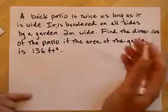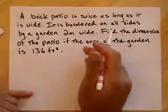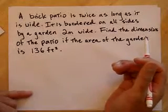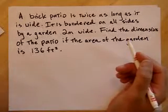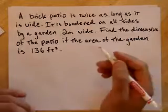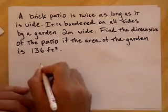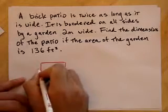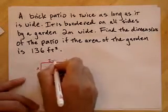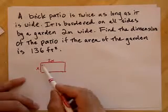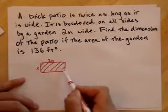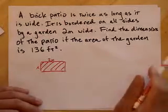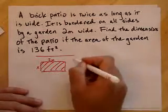A brick patio is twice as long as it is wide. Well, what should I do? Maybe I should draw a brick patio. And it's bordered on all sides by a garden two meters wide. Okay, so I'm picturing this patio with a garden around it.